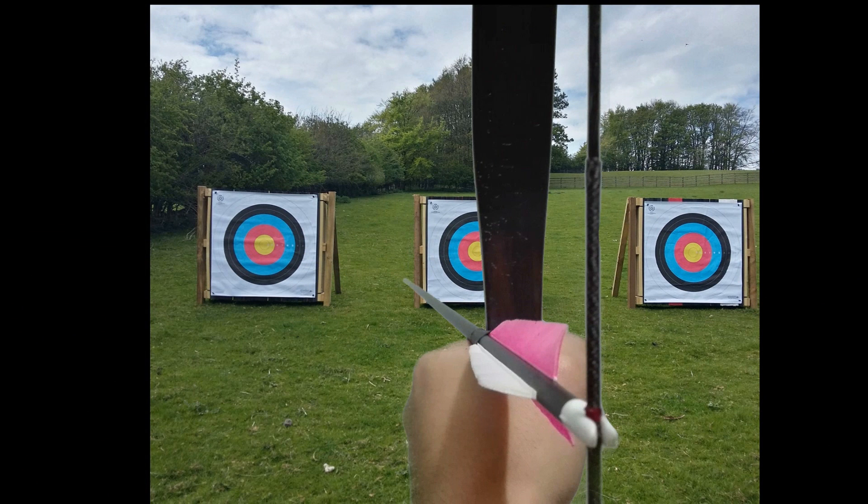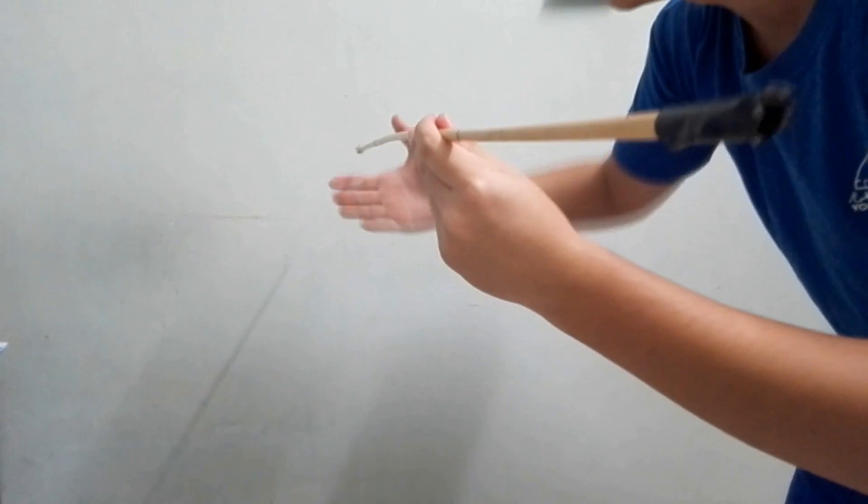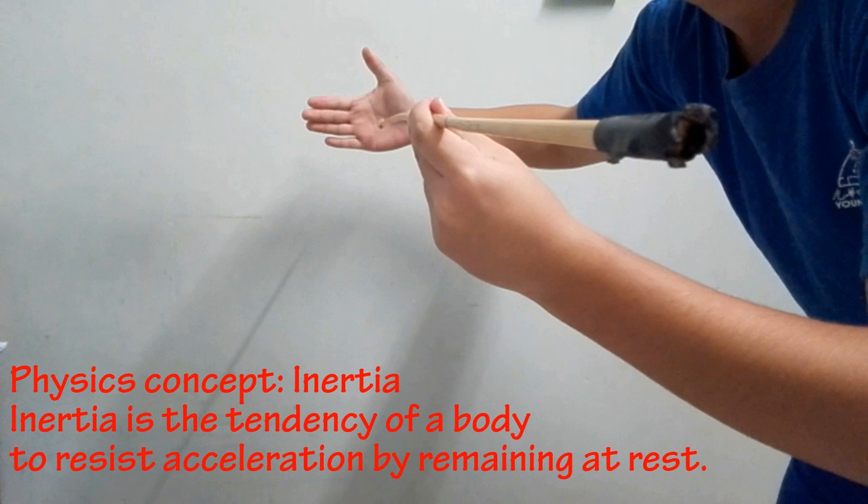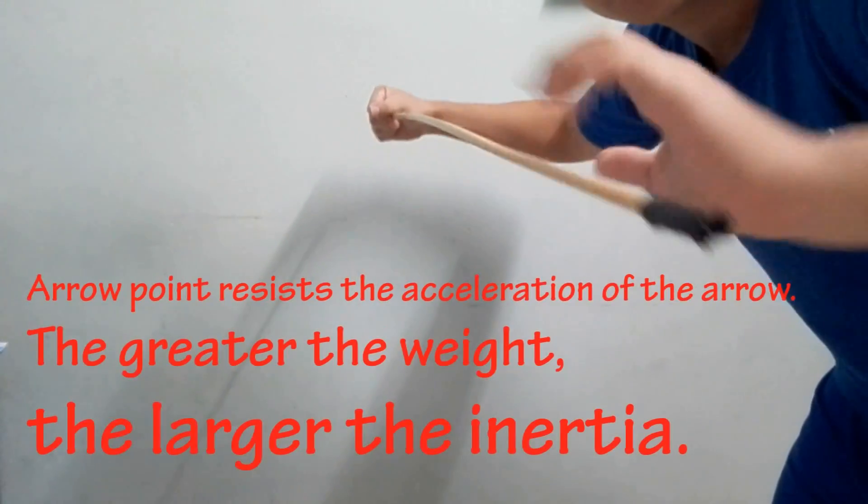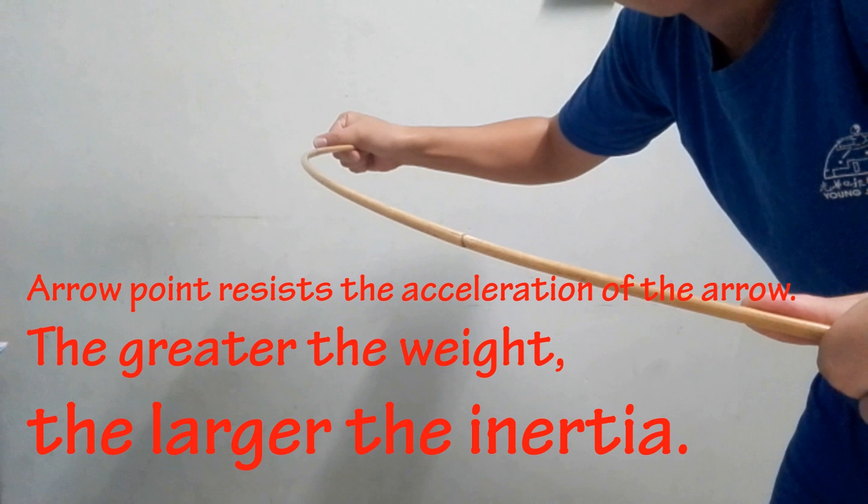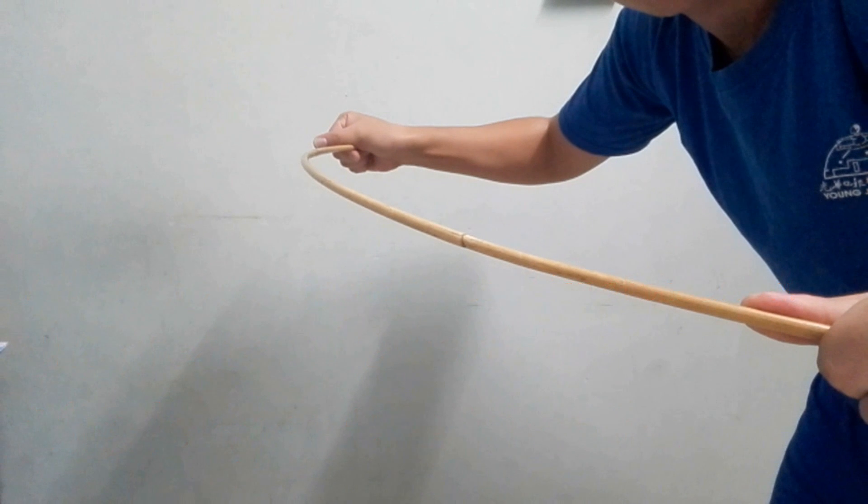Have a look at this picture. This is the Archer's Paradox. When the bow string is released, the arrow is accelerated. Inertia is the tendency of a body to resist acceleration by remaining at rest. At this point, the heavier arrow points resist the acceleration of the arrow shaft by remaining at rest, causing the arrow to be bent.